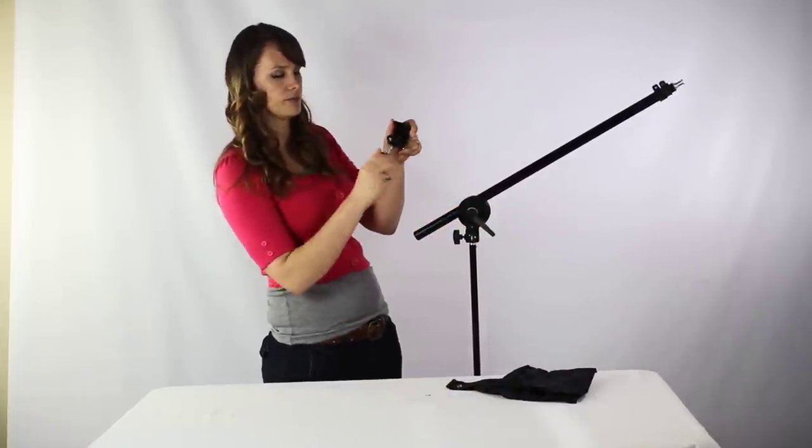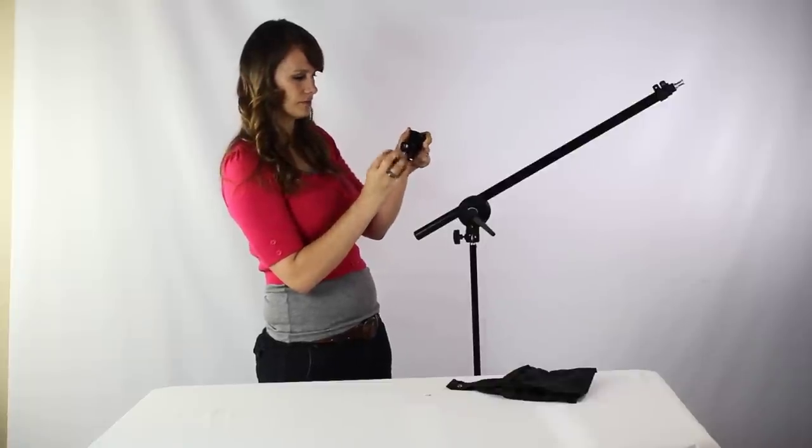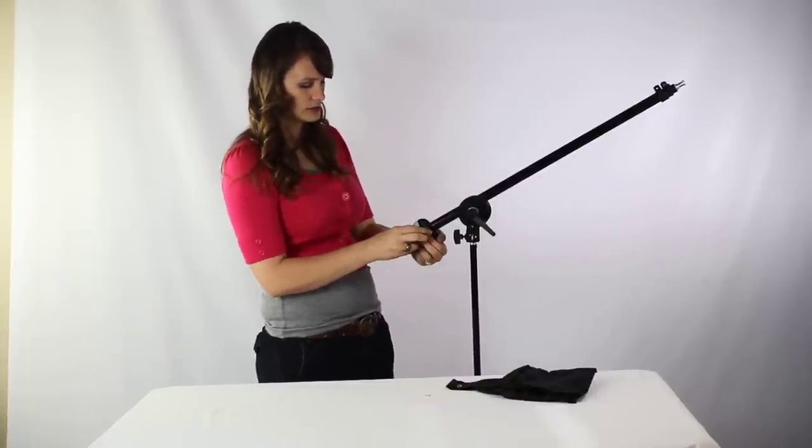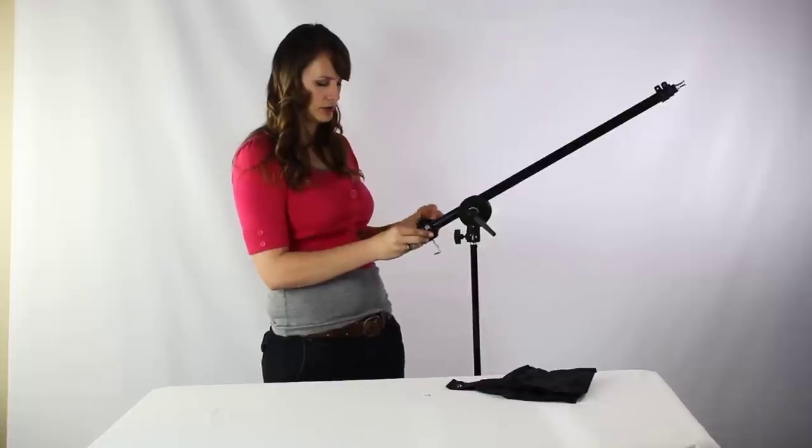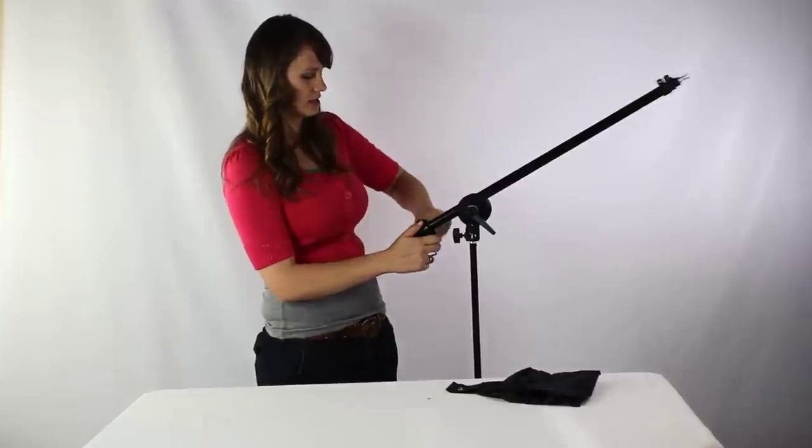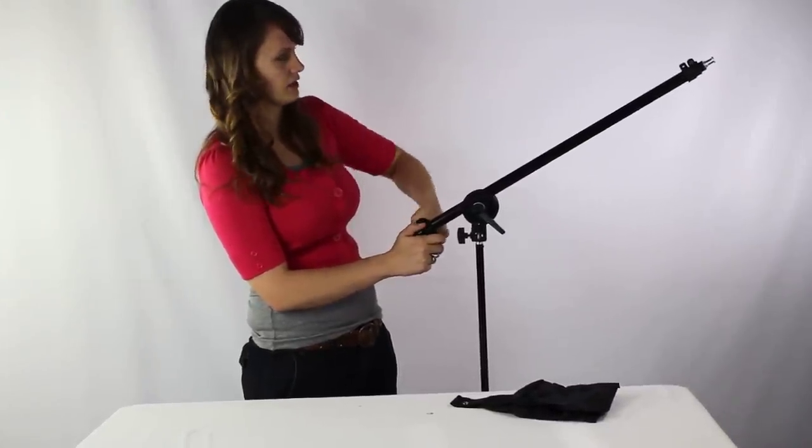You're going to attach the C-clamp. You're going to unscrew this bottom part right here. Once you have enough space, you're going to slide it over. Make sure you have the hook down, and then tighten it right back up. It's going to attach nicely to the end of your boom.